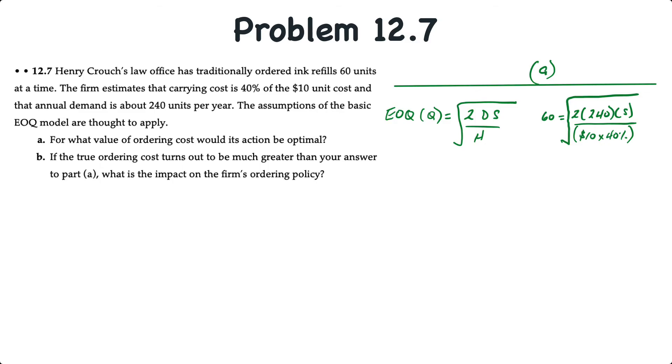For part A, what we want to do is adapt the economic order quantity model. We know that EOQ is equal to 2 times DS over H, and we take the square root of that. But this time, we know that the EOQ is 60 because that's the number of ink refills ordered at a time. That would be the economic order quantity. So in this case, we have 60 equal to the square root of 2 times 240 times the order cost, S. And we divide that by the holding cost, which is $10 times 40%.